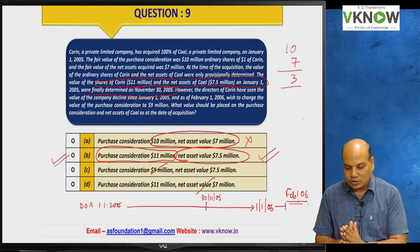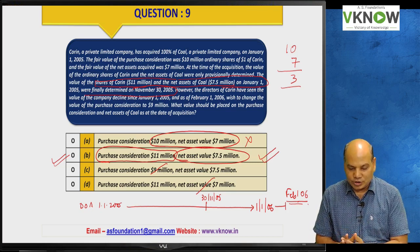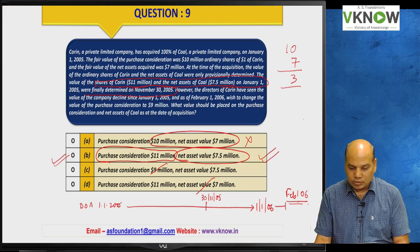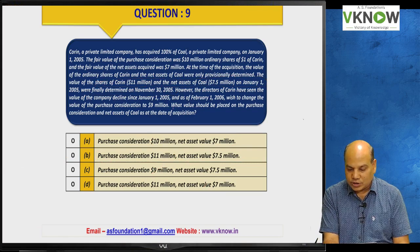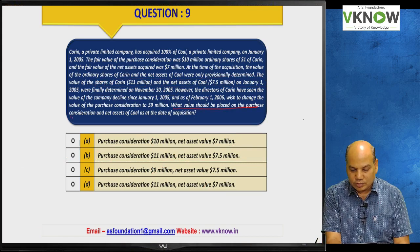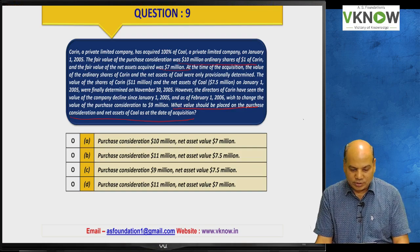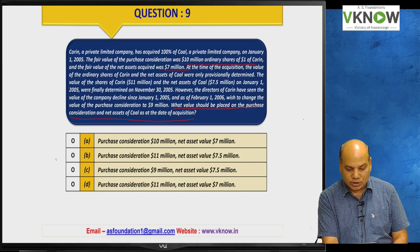The intention of the question is to apply the measurement period concept: what figures will finally be taken as cost of acquisition and net asset value for accounting purposes. Since 30th November 2005 falls within the measurement period, those revised figures are relevant. The answer is B.